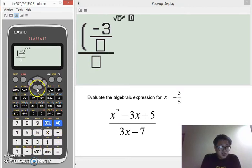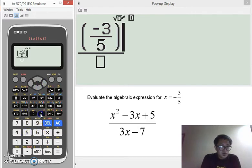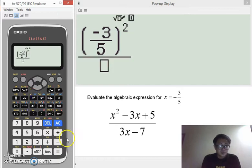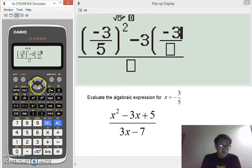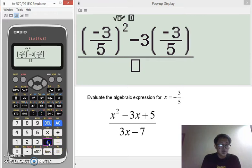So, that's negative 3 over 5 and then squaring it, minus 3 times negative 3 over 5. Remember, for every x in the expression, we will substitute negative 3 over 5, plus 5.